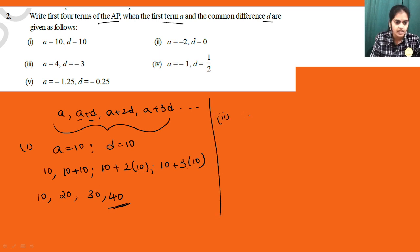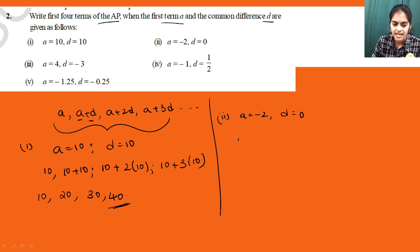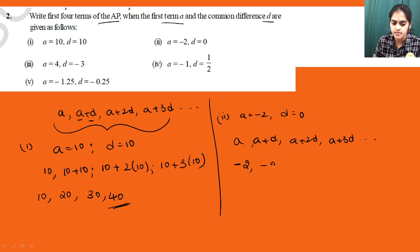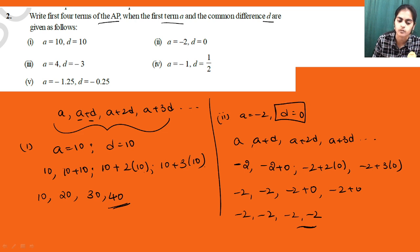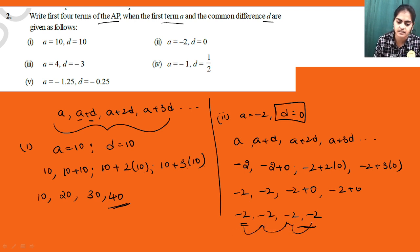The second sub-part: a = -2 and d = 0. Substituting in the general form — a = -2, a+d = -2+0 = -2, a+2d = -2+0 = -2, a+3d = -2+0 = -2. So all four terms are -2, -2, -2, -2. Remember: whenever common difference is 0, all terms of the AP are equal.